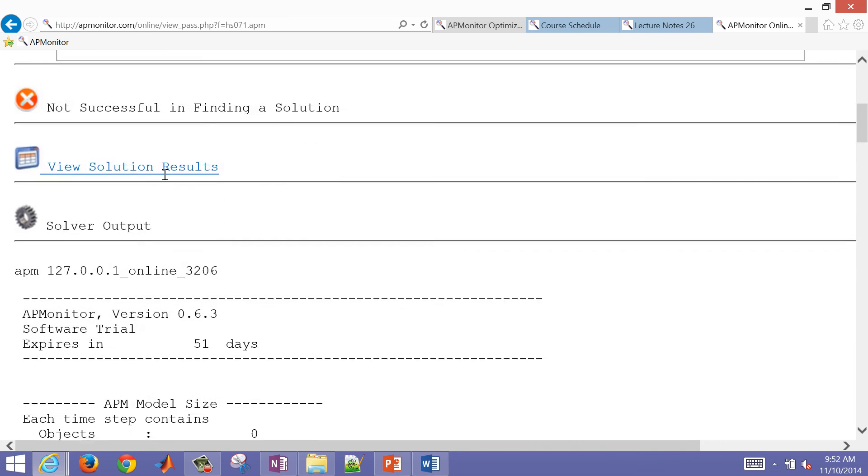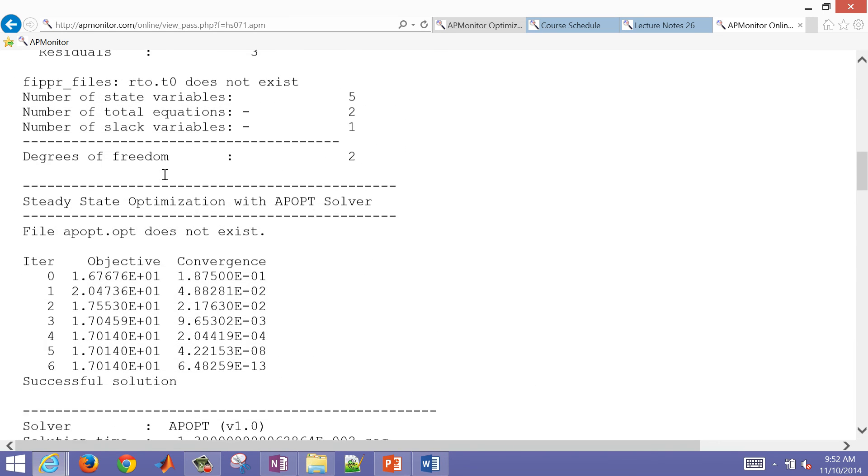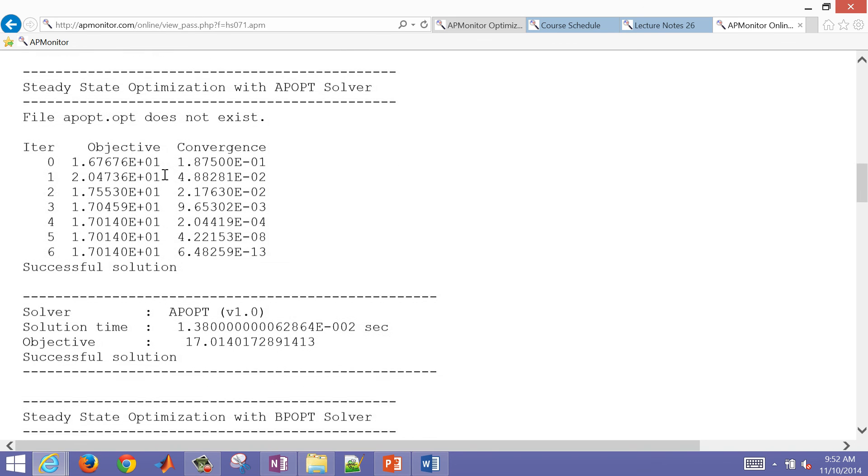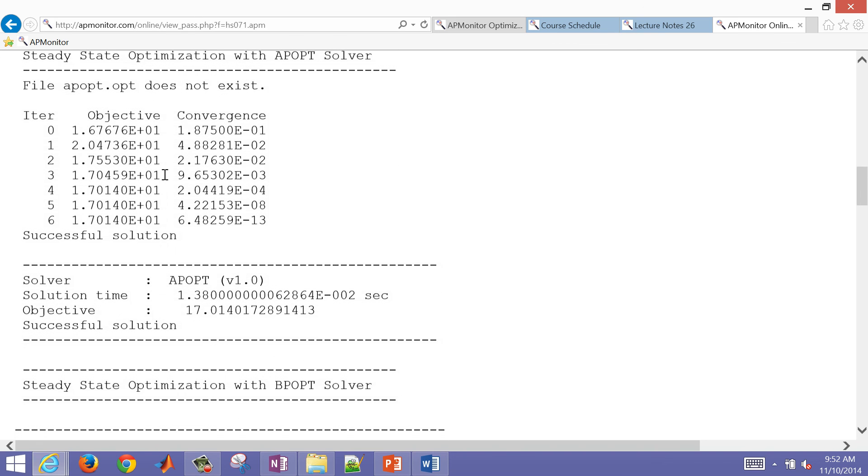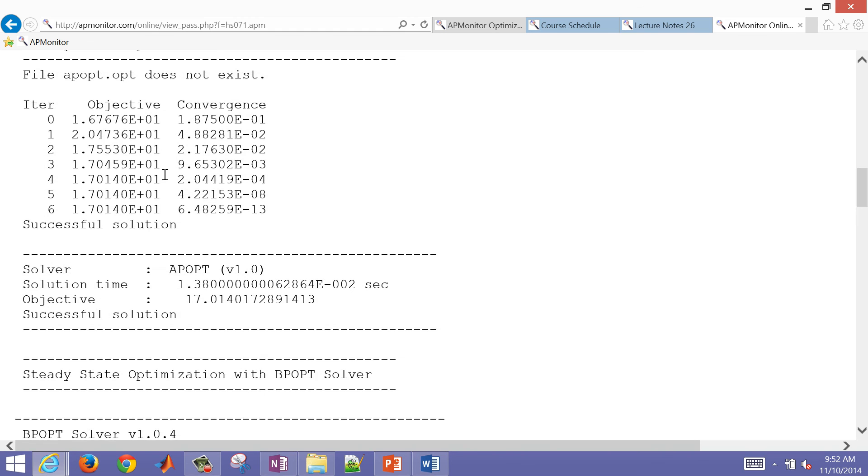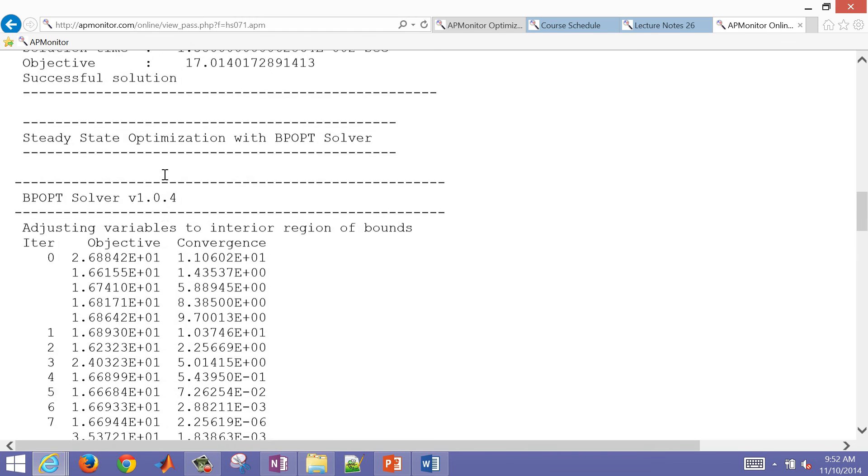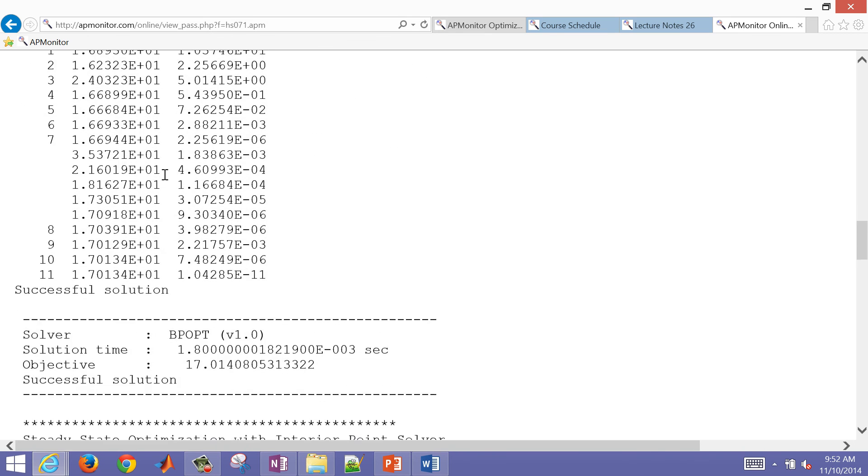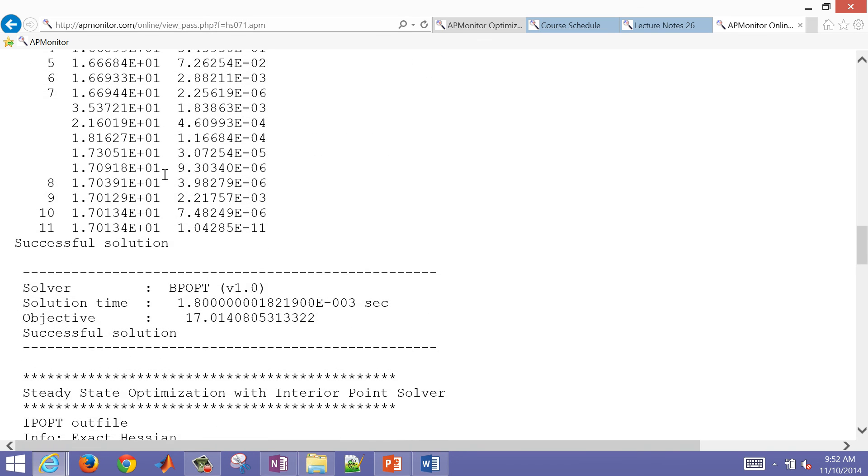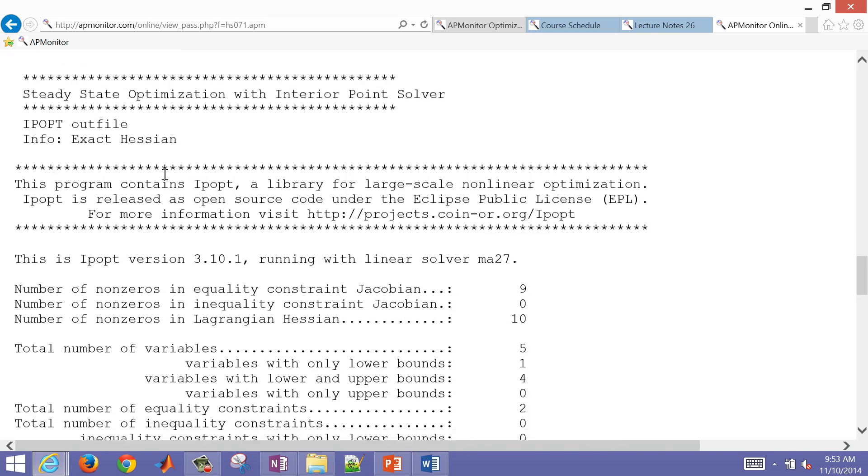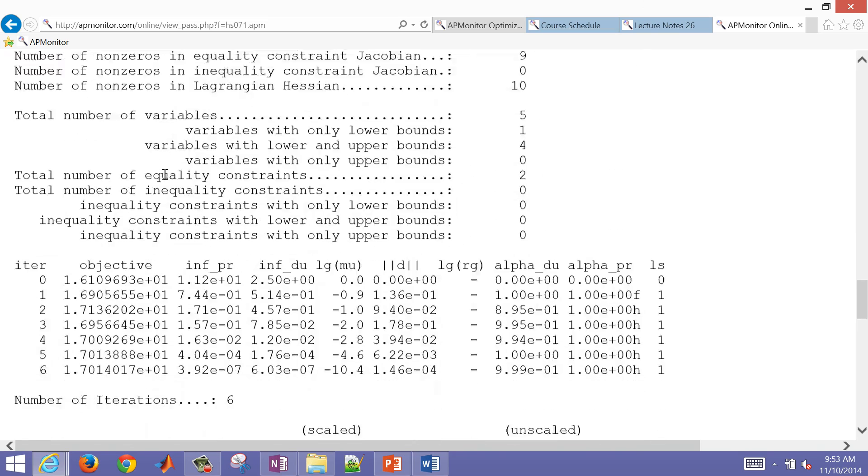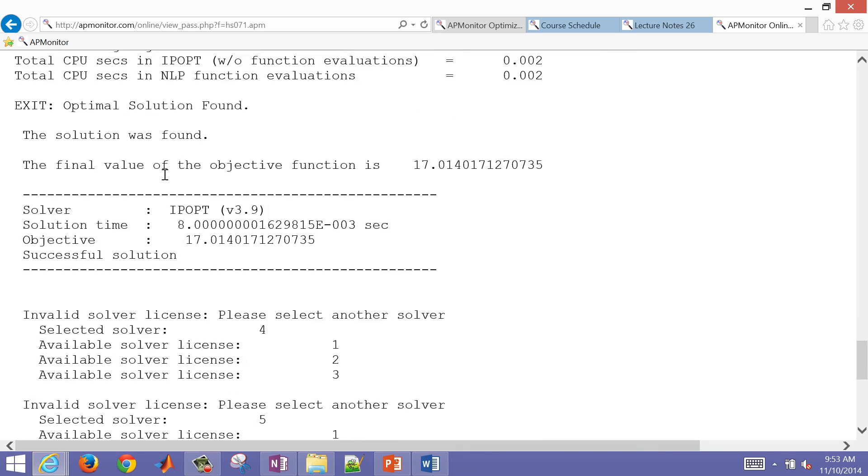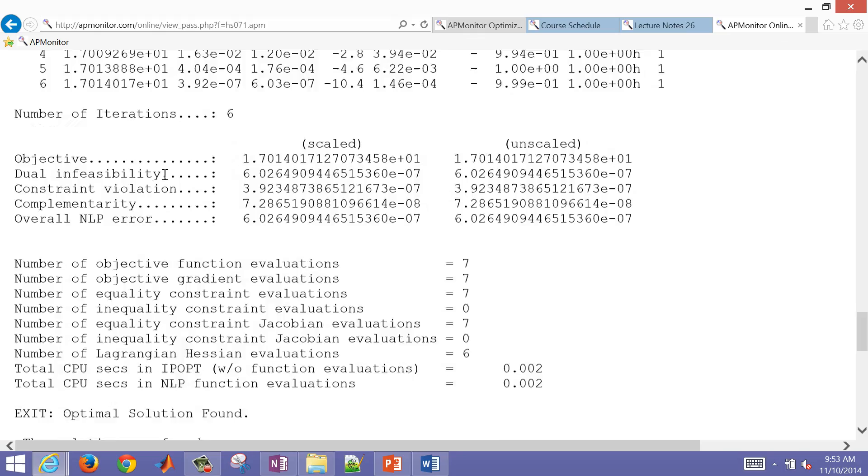Let's see what we had here. The first solver was successful, and it took just a fraction of a second. You can see the objective of 17. Let's compare that with the bpopt solver now. The bpopt solver took a few more iterations, but again, the same objective solution. And then let's also see the ipopt solver. If I come down to the bottom, again, the same objective function. It was able to solve that.